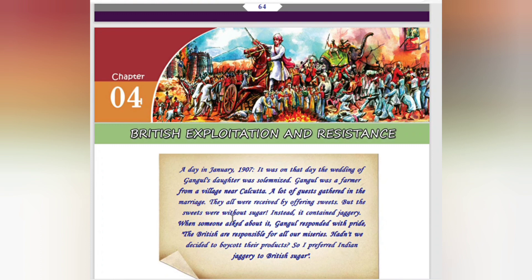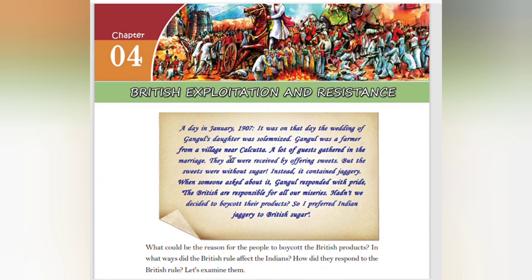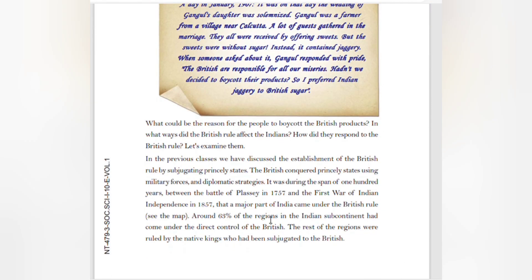Welcome to Teacher at Home. Today we are going to learn the fourth chapter: British Exploitation and Resistance. On a day in January 1907, the wedding of Gangul's doctor's daughter was solemnized. Gangul was a farmer from a village near Calcutta. A lot of guests gathered at the marriage. They were all received with sweets, but the sweets were without sugar — instead they contained gajari. When someone asked about it, Gangul responded with pride: 'The British are responsible for all our miseries. Hadn't we decided to boycott their products? So I preferred Indian gajari to British sugar.'